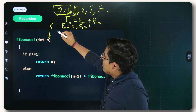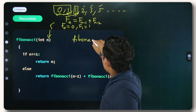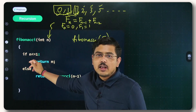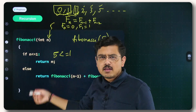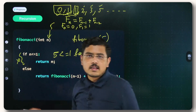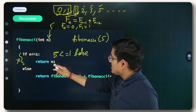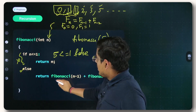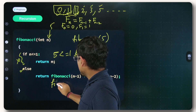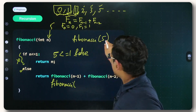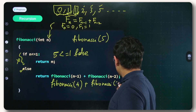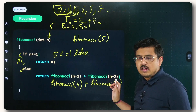Say that we have passed Fibonacci(5). The first thing this function would check is: is 5 less than or equal to 1? That is false, so this if block would not execute. We go ahead to the else block, which executes the two recursive calls — Fibonacci(N-1) and Fibonacci(N-2). So that leads to Fibonacci(4) plus Fibonacci(3), since 5 minus 1 is 4 and 5 minus 2 is 3.